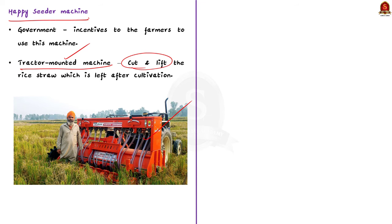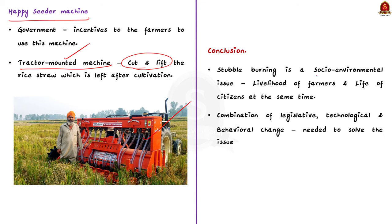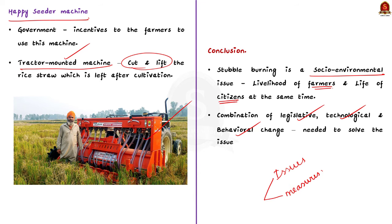Now let us see the conclusion. Stubble burning is a socio-environmental issue which deals with livelihoods of farmers and the lives of citizens at the same time. A combination of legislative, technological, and behavioral change is needed to eradicate this issue. So this is all about the discussion — we have seen the various issues associated with stubble burning and the measures taken to prevent it. Now let us move to the next topic.